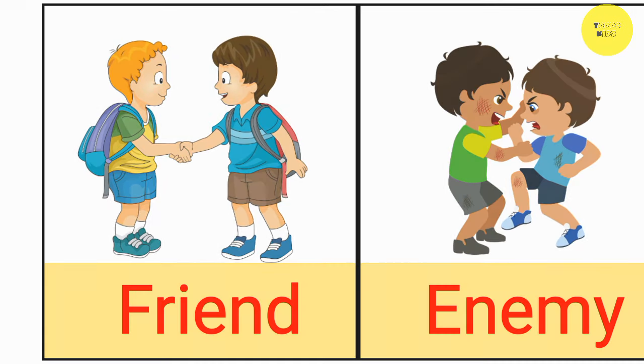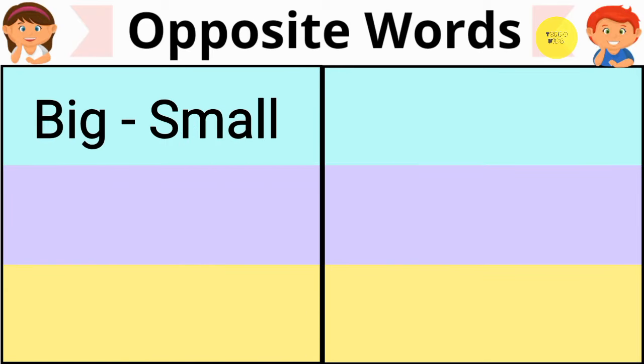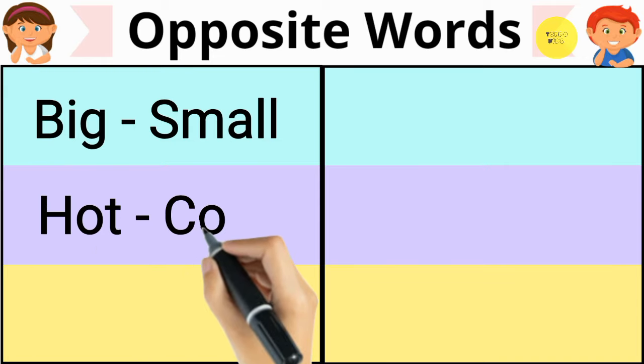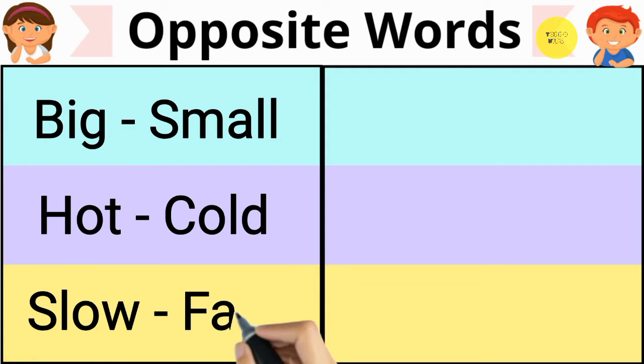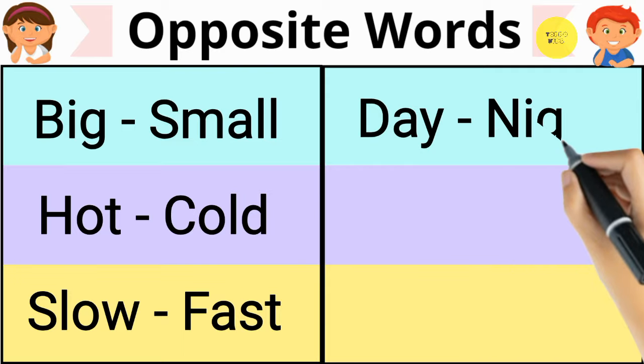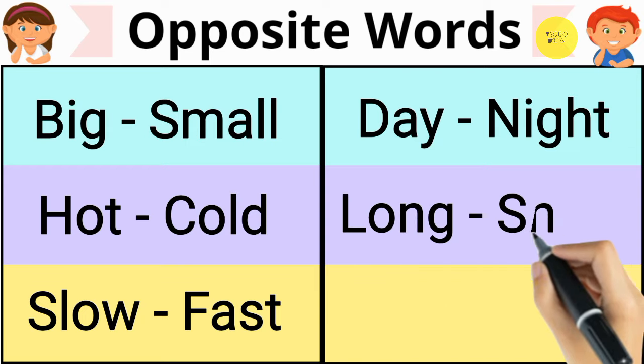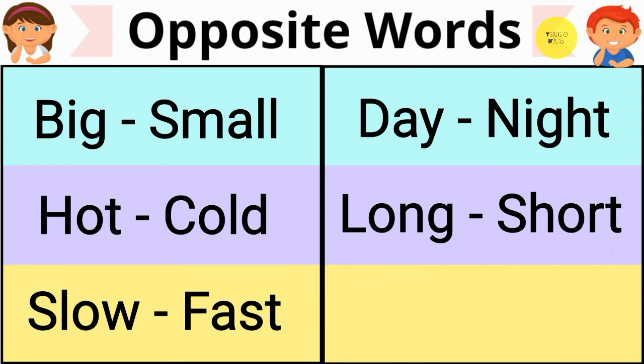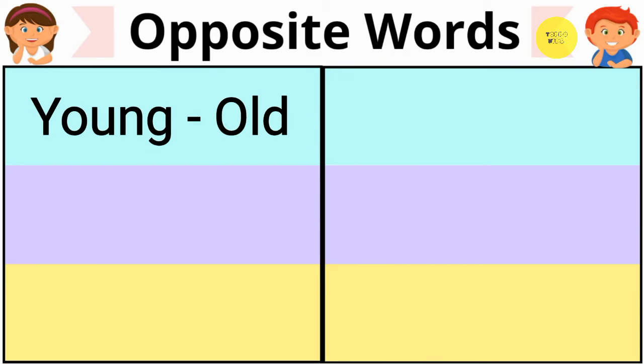Let's revise. Big, small. Hot, cold. Slow, fast. Day, night. Long, short. Happy, sad. Young, old.